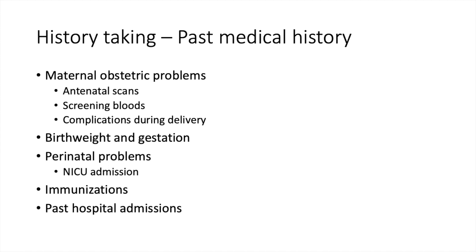Past medical history is best approached in chronological order. First, maternal obstetric problems during pregnancy — the antenatal scans. For example, for Down syndrome, you have the combined test or the triple/quadruple test. Were the test results normal? Routine screening bloods include hepatitis B, HIV, syphilis, and maybe rubella in some countries. Were there any of these infections throughout pregnancy? Any complications during delivery — did the mother lose too much blood? Was instrumental delivery required, and were there any injuries from it?